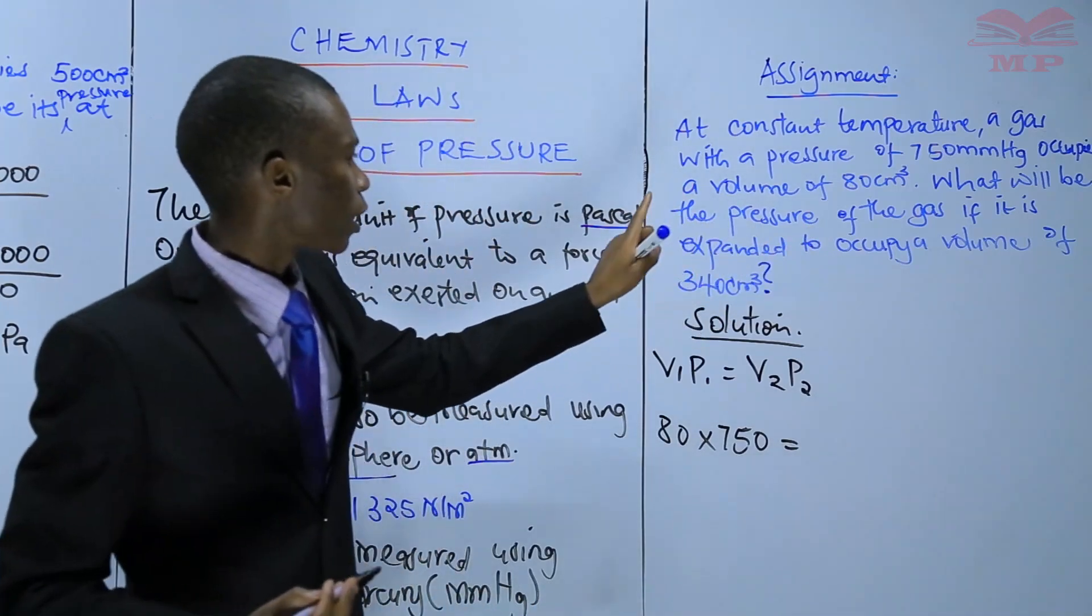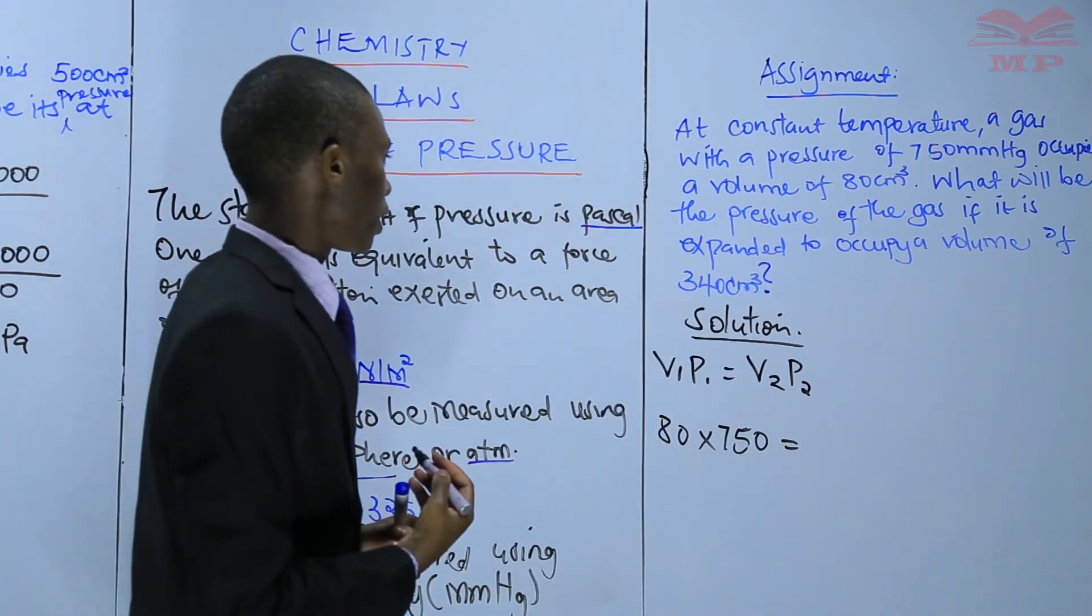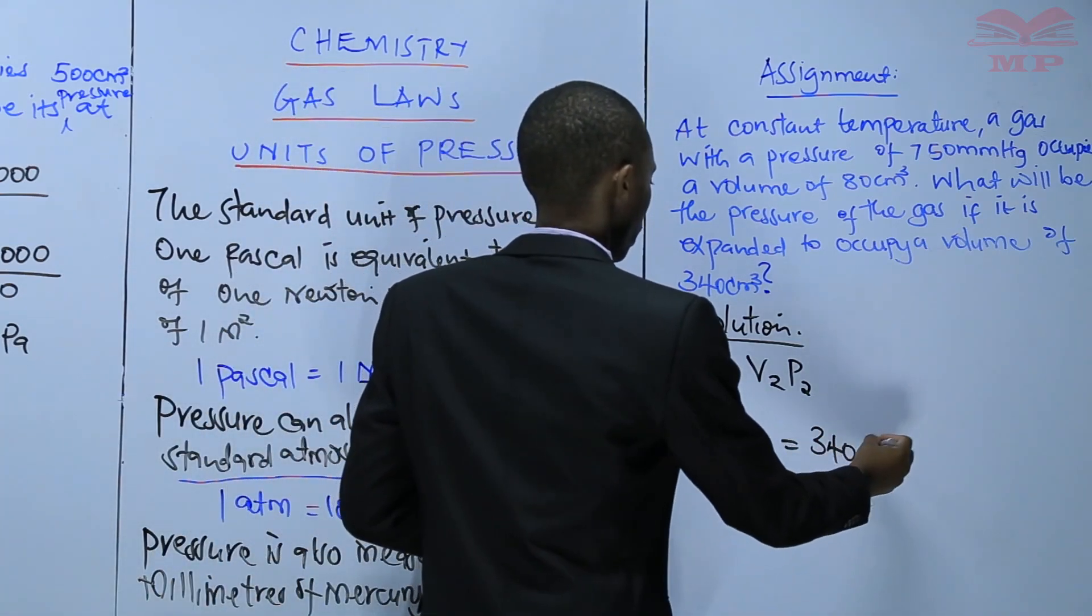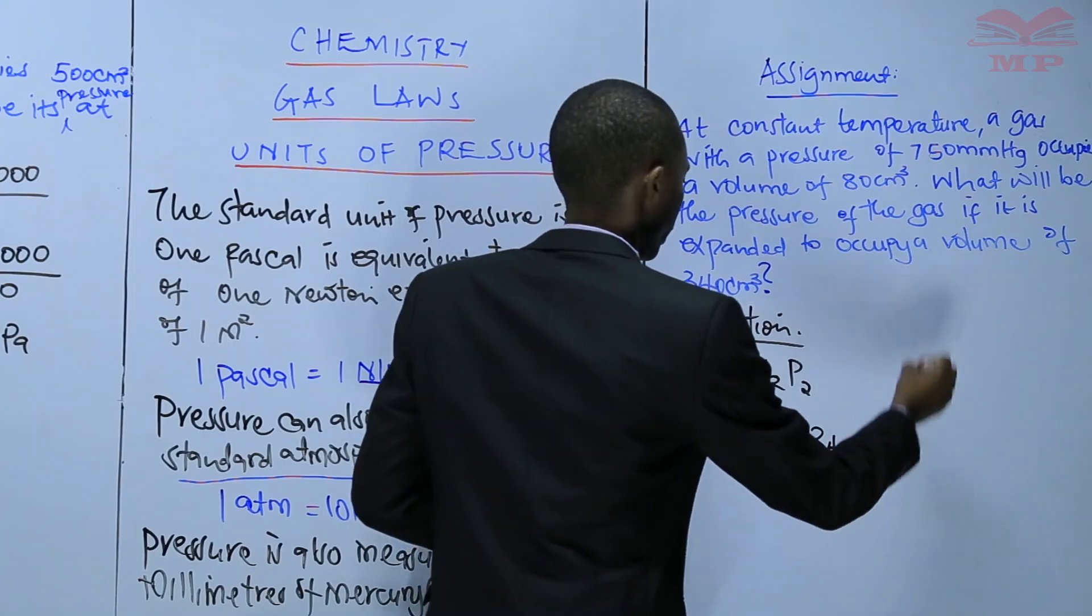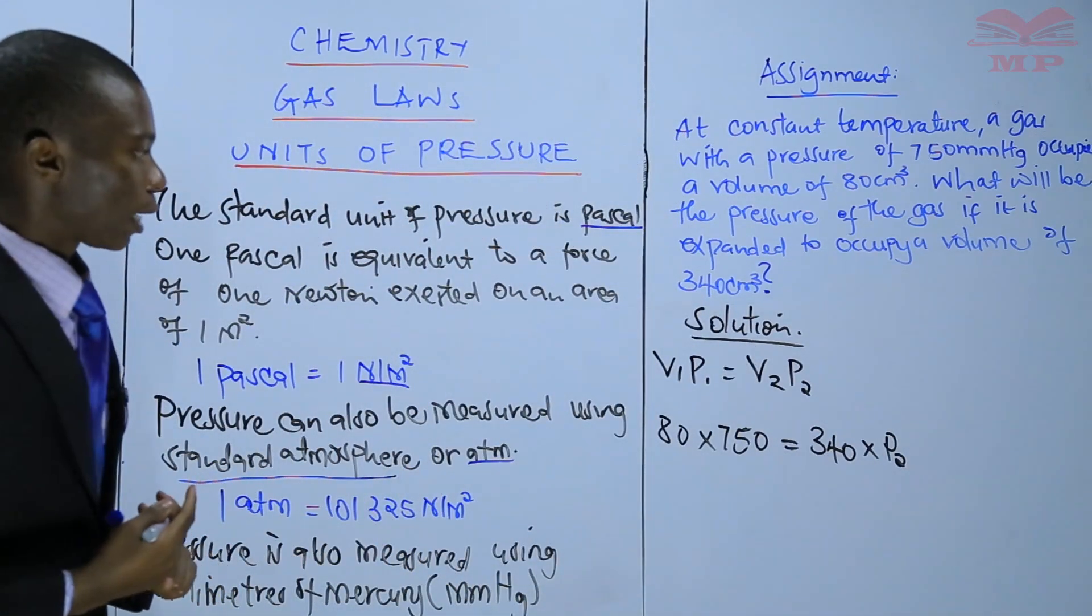This is equal to what will be the pressure of the gas if it is expanded to occupy a volume of 340 centimeters cubed. Therefore, our V2 is 340. What we don't have is P2, and that is what we are calculating.